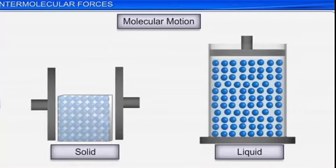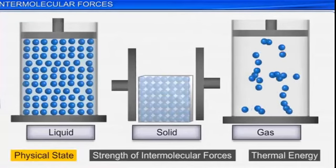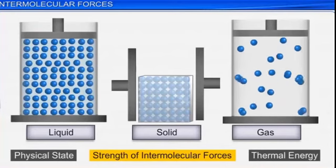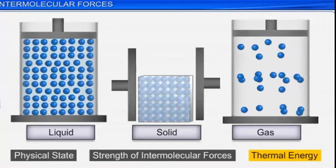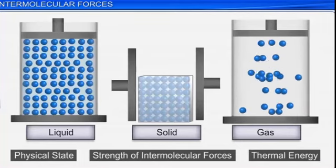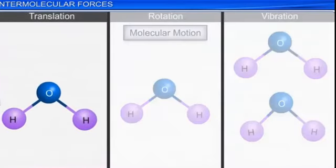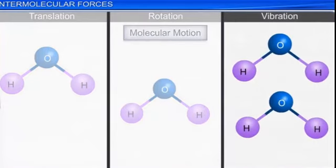Solids cannot be compressed, liquids can be compressed a little, and gases can be compressed a lot — for example, in gas cylinders. In solids and liquids, the intermolecular strength is high, but in gases, the molecules are in vibrational motion due to thermal energy, which is why they can be compressed. Next we will discuss thermal energy.